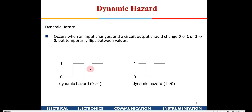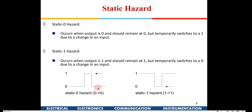Similarly, in the one-to-zero dynamic hazard case, initially the output is one, and when the input changes, we expect a zero. But instead it goes to zero, then back to one, and then back to zero again. For the static hazard, the final output is zero and the initial output is also zero, but there is an unwanted one in between — or similarly, output remains one with an unwanted transition in between.